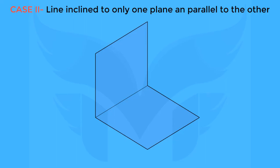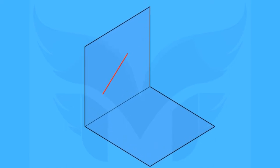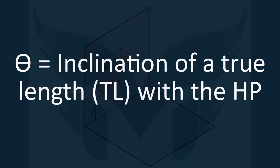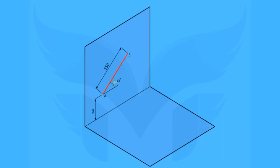For the first example, we imagine a line on the VP. The line is parallel to the VP but not parallel to the HP — the endpoints are not equidistant from the HP. Let's name these endpoints as A and B. Length of the line is 150 mm, end A is 80 mm above the HP, and the line is inclined to the HP at 45 degrees. Note that theta is the fixed notation to show the inclination of a true length with the HP.